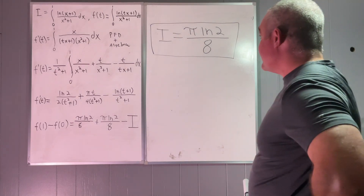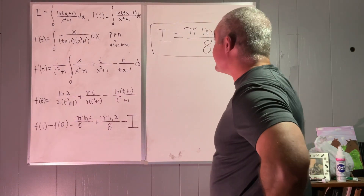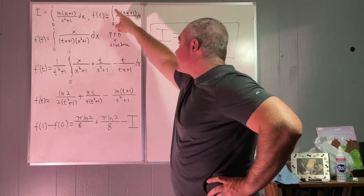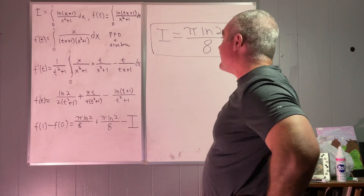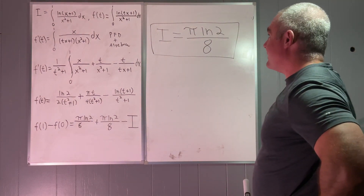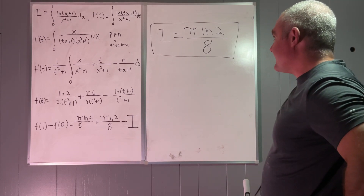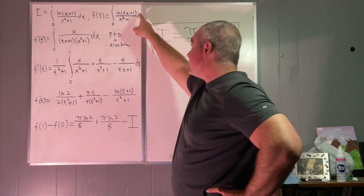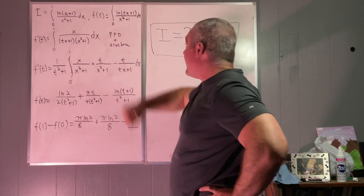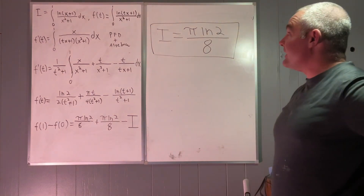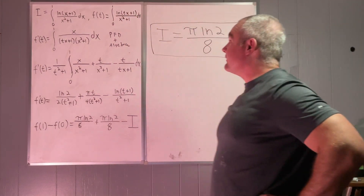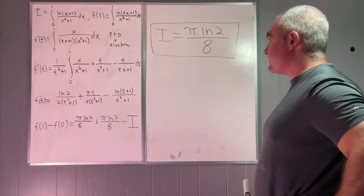The first step is always to create a function in terms of a new variable — in this case t — closely resembling the original integral. It will be the integral from 0 to 1 of the natural log of tx plus 1 over x squared plus 1, dx. That is a function of t because when you evaluate with respect to x from 0 to 1, all the x terms are replaced with constants, leaving only t as the variable.